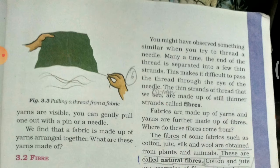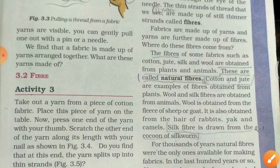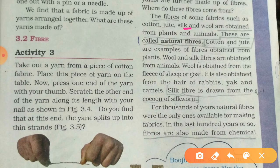Where do these fibers come from? The fibers of some fabrics such as cotton, jute, silk and wool are obtained from plants and animals. These are called natural fibers. Cotton and jute are examples of fibers obtained from plants. Wool and silk are fibers obtained from animals. Wool is obtained from the fleece of sheep or goat, and also from the hair of rabbit, yak and camels.